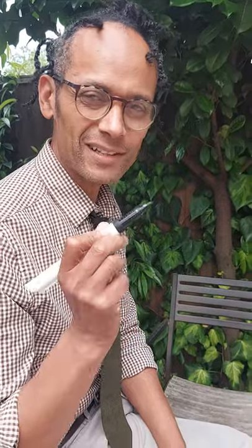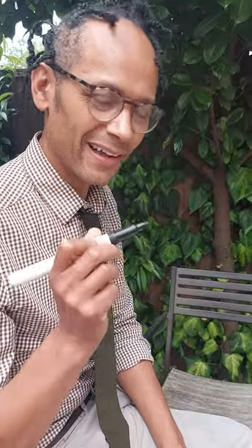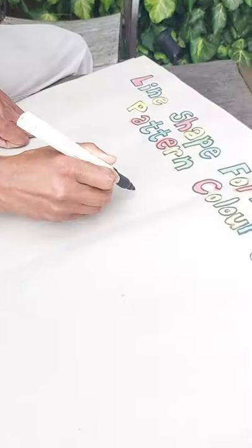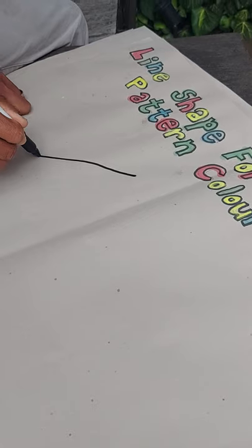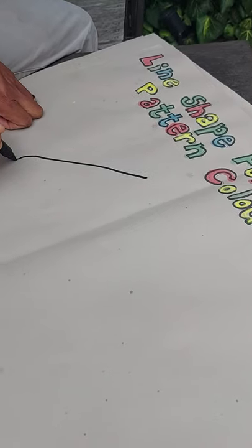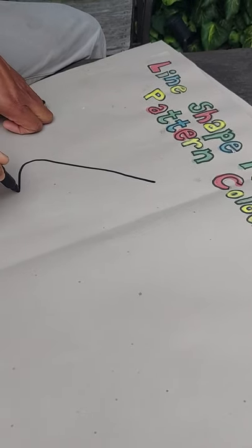First, we'll start with line. A line is a mark literally moving through space.